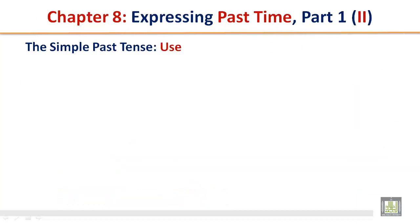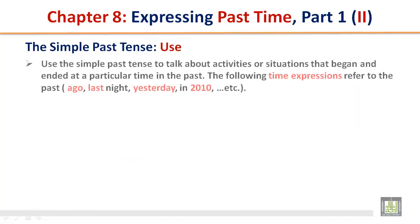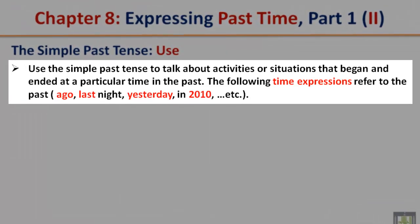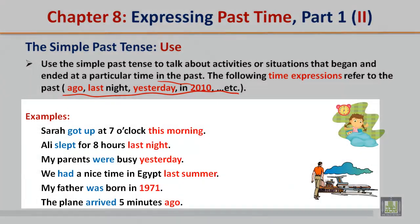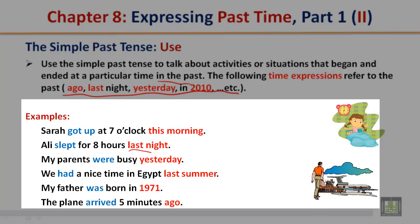The simple past tense — use. Use the simple past tense to talk about activities or situations that began and ended at a particular time in the past. Time expressions include: ago, last night, yesterday, in 2010, etc. Examples: Sarah got up at seven o'clock this morning. Ali slept for eight hours last night. My parents were busy yesterday. We had a nice time in Egypt last summer. My father was born in 1971. The plane arrived five minutes ago.